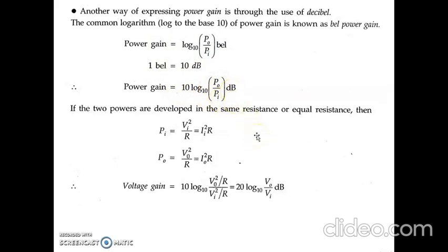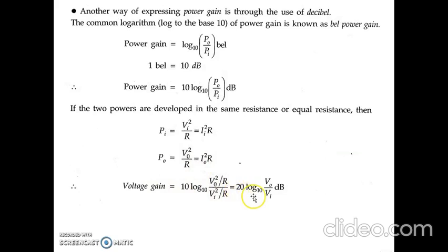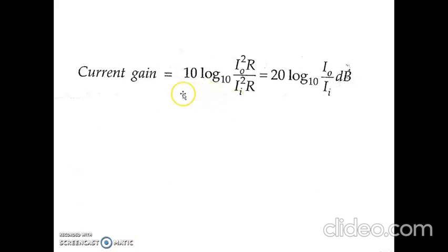If the two powers are developed in the same or equal resistance, then Pᵢ = Vᵢ²/R = Iᵢ²·R and P₀ = V₀²/R = I₀²·R. Voltage gain can then be expressed as 20·log₁₀(V₀/Vᵢ) dB, and current gain as 20·log₁₀(I₀/Iᵢ) dB.